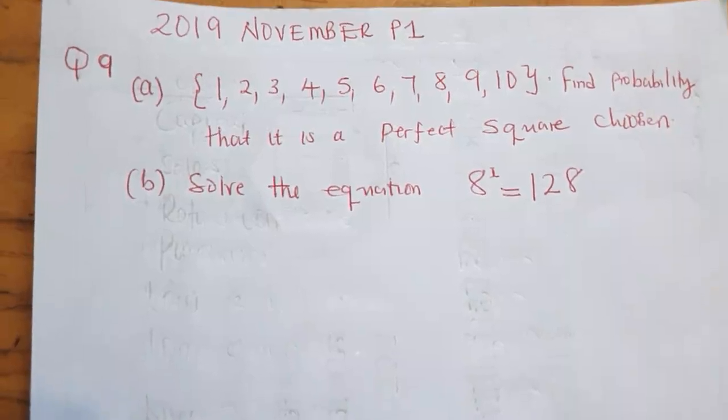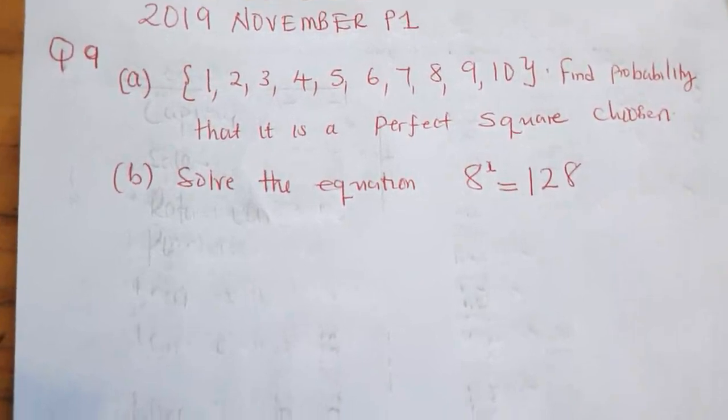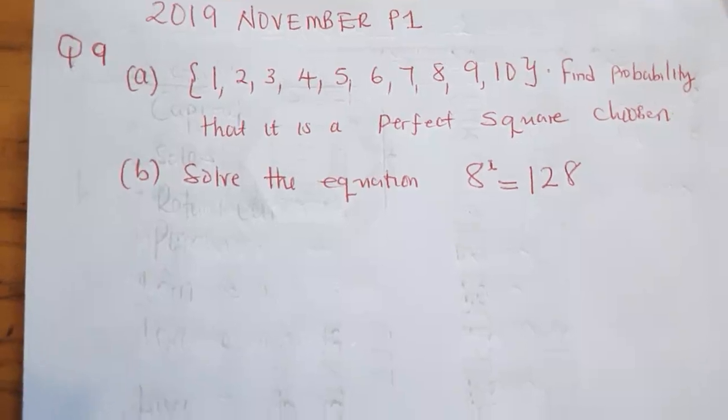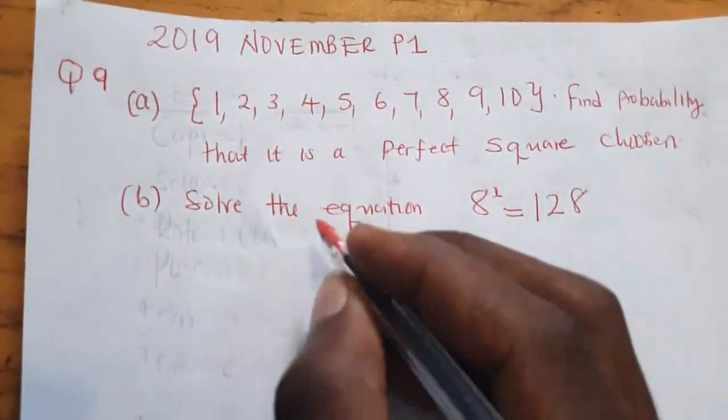They are saying find the probability that it is a perfect square. Now what you need to know, what is a square? There's a difference between a square and a square root. A square is a number that you get after you multiply it twice by its number. So let's look at the solutions.